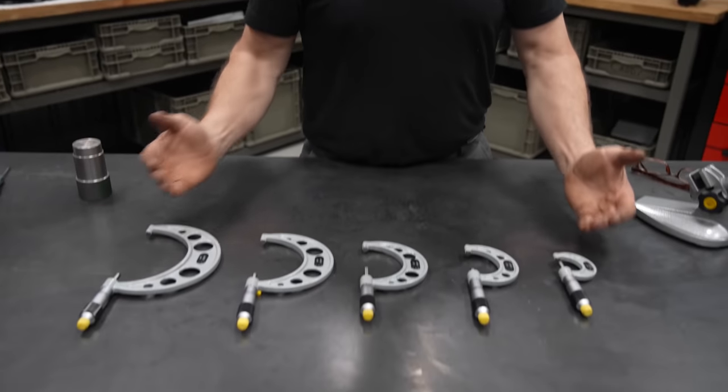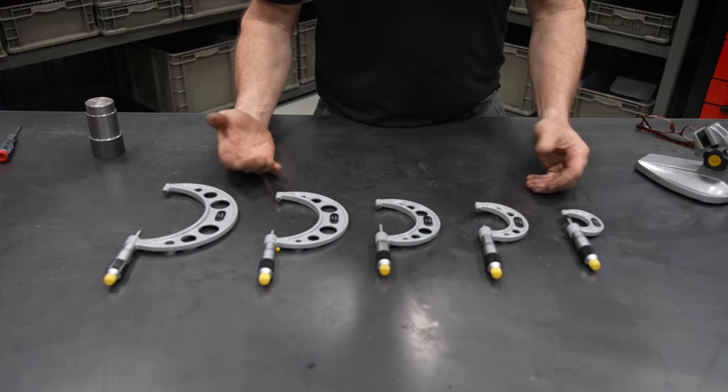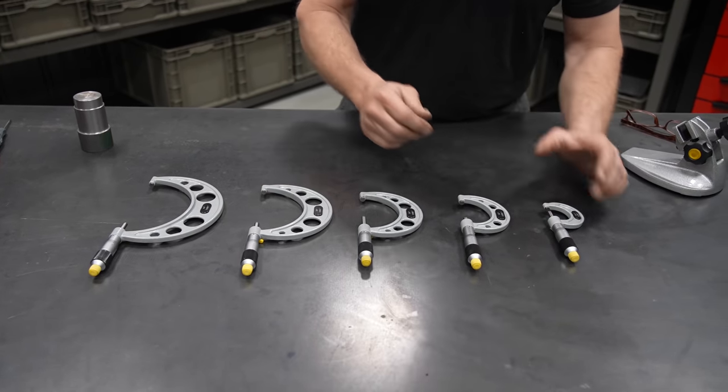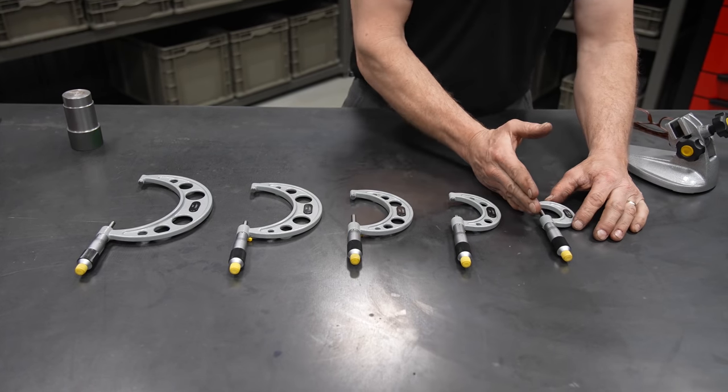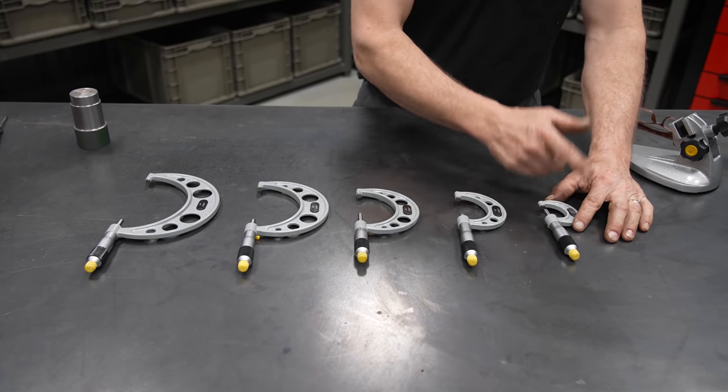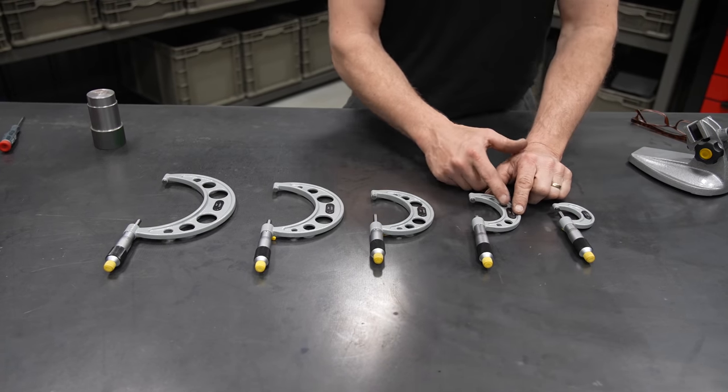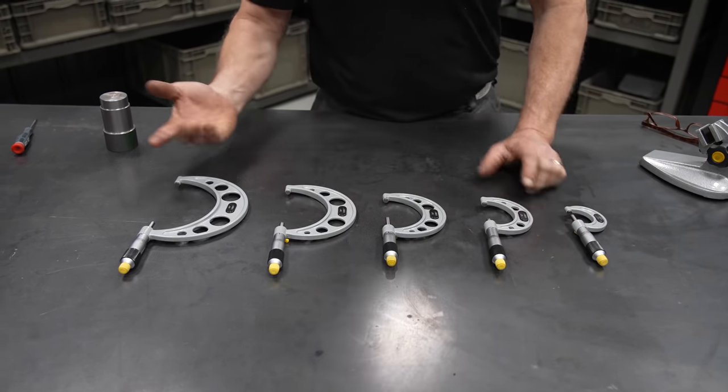Micrometers can be bought in either a full set or individually. They basically range in their size so they stay precise. For instance, down here we have a zero to one, meaning it measures from zero out to one inch. And then you have one to two, two to three, four to five, so on and so forth.